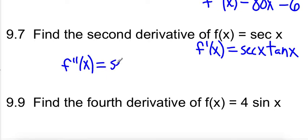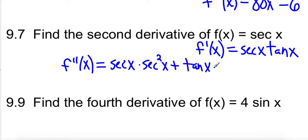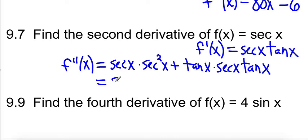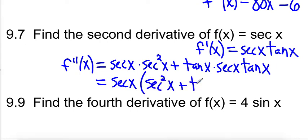This requires the product rule. So: one times the derivative of two — the derivative of tangent is secant squared — plus two times tangent times the derivative of one, where the derivative of secant is secant tangent. That's 1d2 plus 2d1, the product rule. Simplifying: they both have a secant in common, so we factor out secant x, leaving us with secant squared x plus tangent squared x. That's our second derivative.